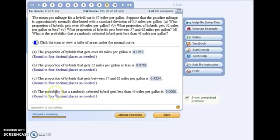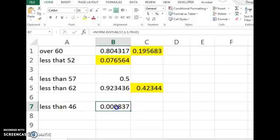And the last one, the probability a randomly selected hybrid gets less than 46 miles a gallon. Or less than, we just type it in directly, 46. The mean's 57. Standard deviation's 3.5. We use true. And Excel gives us the probability of being less than that given number.